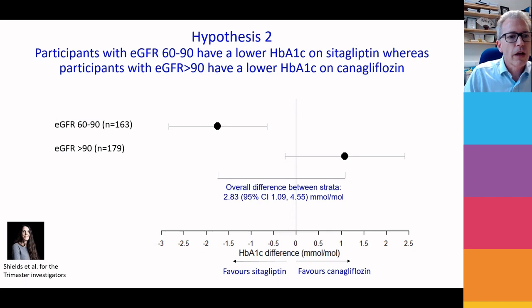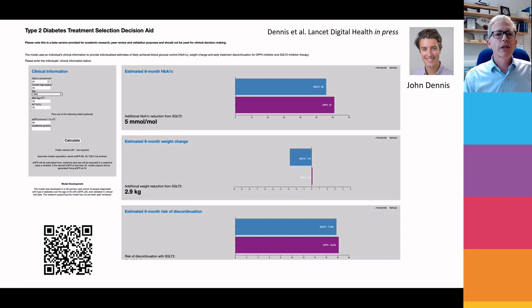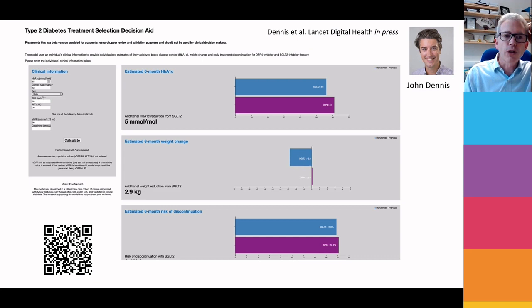That's not a huge difference, but we know this for zero cost because we all know BMI and it's available in all the records. For renal function, again showing that if your eGFR is 60 to 90 you respond better to sitagliptin and canagliflozin — again, the difference is about 3 millimoles per mole — really confirming that your phenotype predicts your likelihood of responding. We've just got a paper published in Lancet Digital Health where we've developed an app that allows you to put in clinical data and see which is the best drug between SGLT2s and DPP4 inhibitors, and we are developing a model that will include all five second-line drugs.